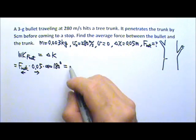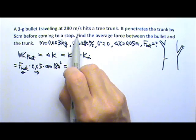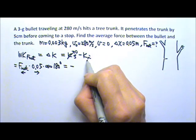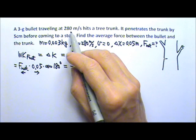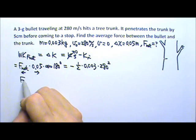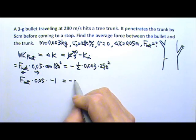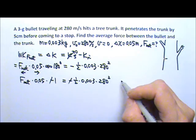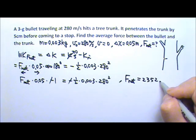This equals the change in kinetic energy, which is final minus initial. Since the bullet stops at the end, the final kinetic energy is 0, so this equals the negative initial kinetic energy: negative one-half m times the initial velocity squared. So we have: F_net × 0.05 × cos(180°) = −½ × 0.003 × 280². The negatives cancel, and we find the magnitude of the net force is 2,352 newtons.